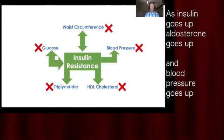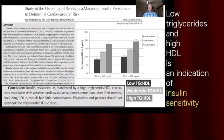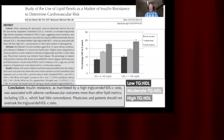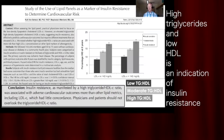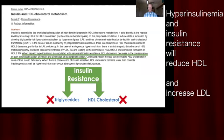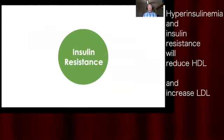What about triglycerides and HDL cholesterol — two common lipid markers? Low triglycerides and high HDL is looked at as an indication of insulin sensitivity. In contrast, if someone has high triglycerides and low HDL, that is an indication of insulin resistance.